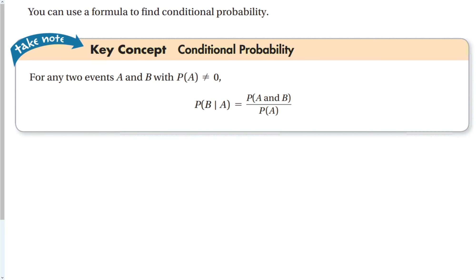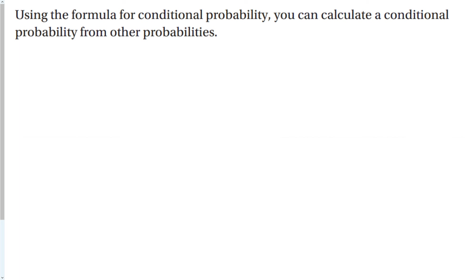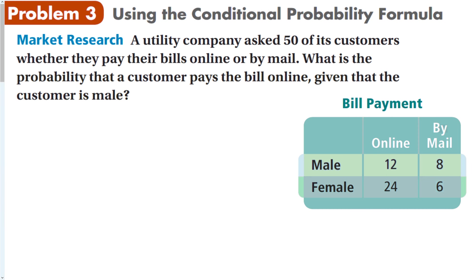We can also use a formula to find conditional probability. For any two events A and B, with P(A) not equal to zero — because you can't divide by zero — the probability of B given A is the probability of them both together divided by the probability of A: P(B|A) = P(A∩B) / P(A). Using this formula, we can calculate conditional probabilities from any other probabilities.